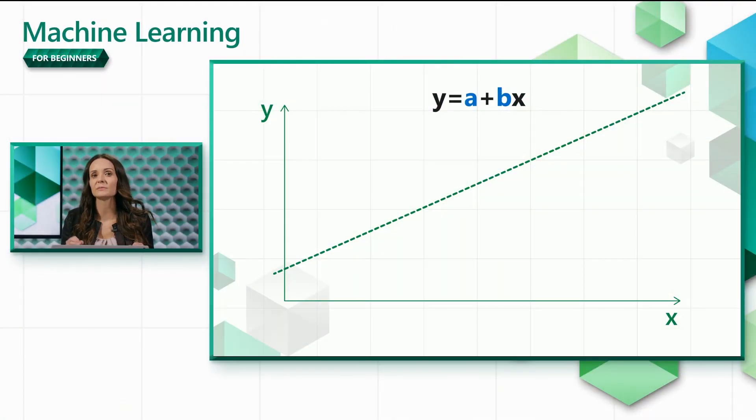Let's consider the one-dimensional scenario again, where we have a single feature x and we want to predict y. You can see in this diagram the equation for a straight line. We already have the values for x and y in our data, so the linear regression algorithm will work on finding the best values for a and b.